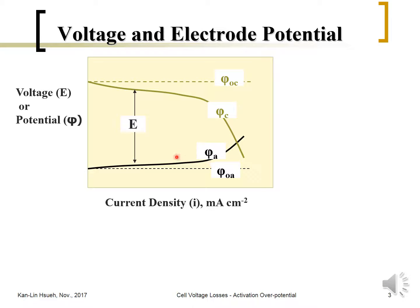As mentioned in the previous unit, we are talking about electropotential. For instance, this is the cathode potential, this is the anode potential, and this is the potential at equilibrium — the cathode potential at equilibrium and the anode potential at equilibrium. Ideally, the electropotential should remain constant at different current densities.